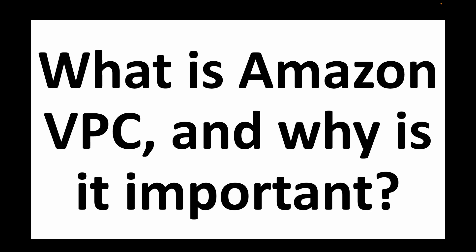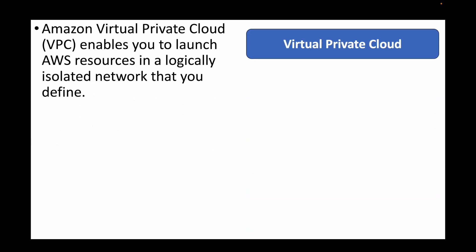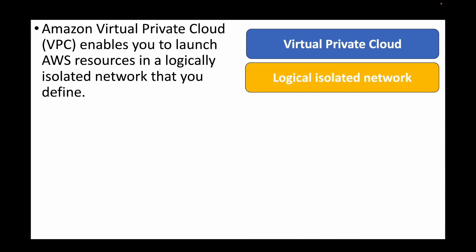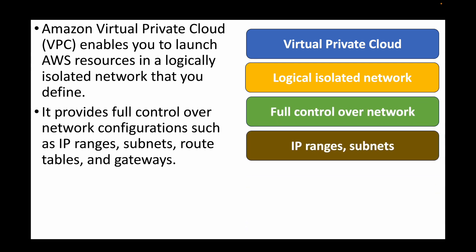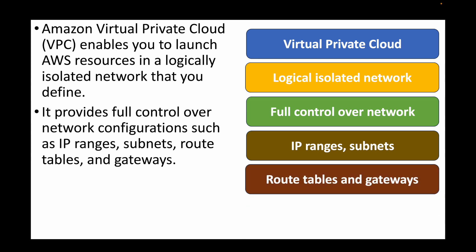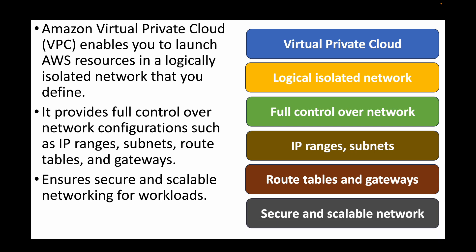The first question is: what is Amazon VPC and why is it important? VPC stands for Virtual Private Cloud. We can use it to create a logically isolated section in the AWS cloud. Whenever we want to secure our resources, we can use this VPC to securely launch and manage those resources. It also provides control over network configuration — IP address ranges, subnets, route tables, and gateways — ensuring the network is scalable and secure.